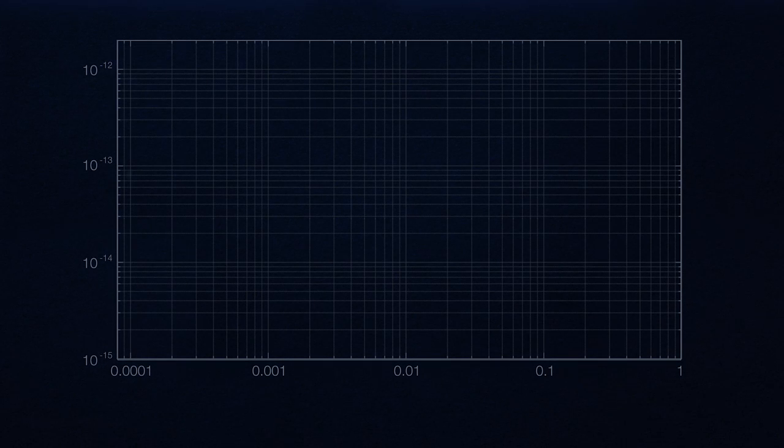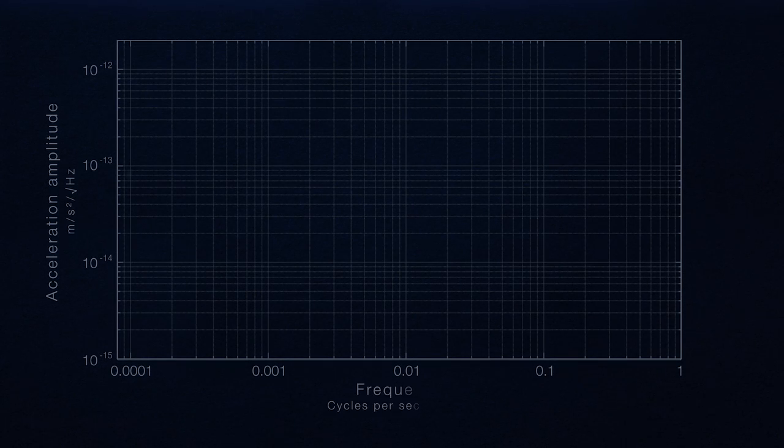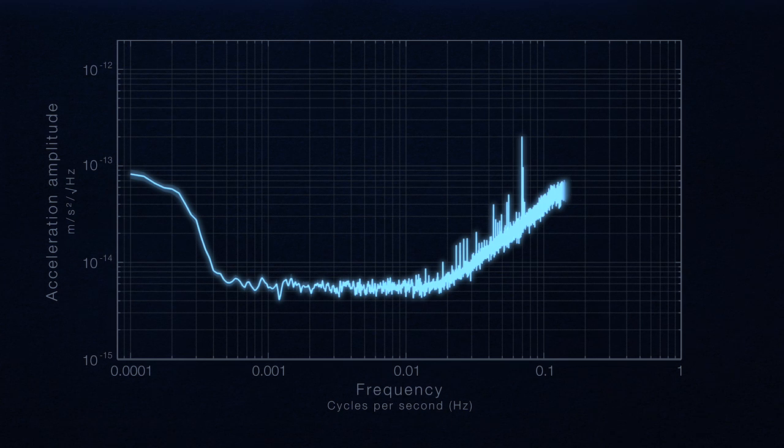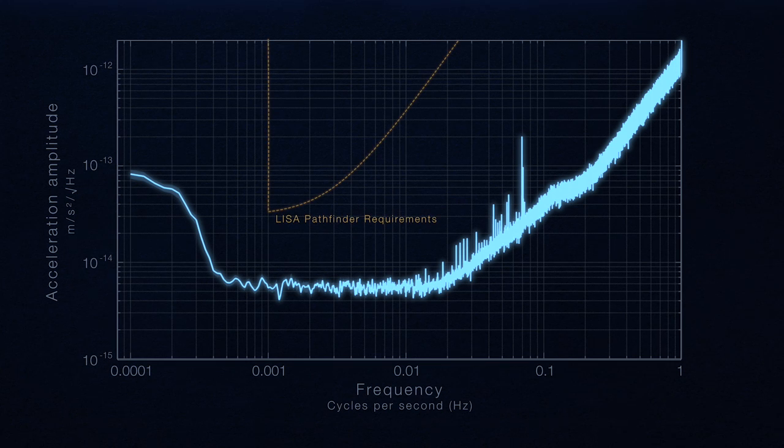What's shown in the graph here is basically how imperfect this test mass is in freefall. We'd like it to be perfect, it's not quite perfect, and we're measuring the imperfection. This is directly what we measure with the instrument and the very exciting thing is it's far below the LISA Pathfinder requirements.